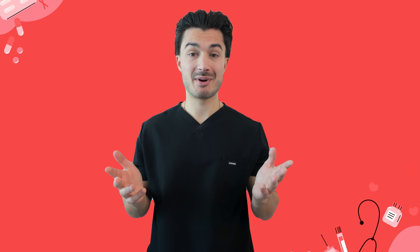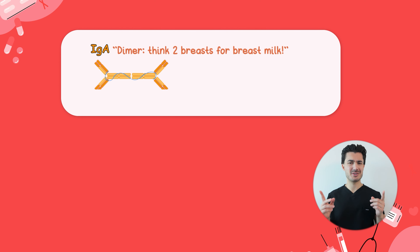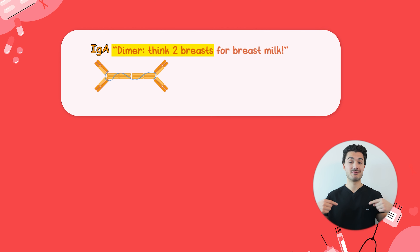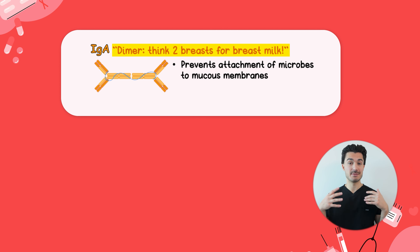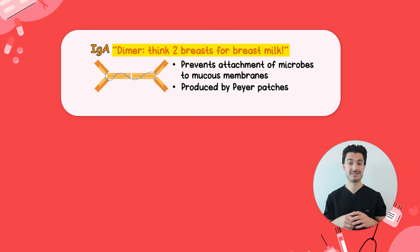Moving on, let's talk about IgA. It's key to know that IgA is a dimer, and the USMLE wants you to know that the two monomers are joined by a J chain. A silly mnemonic: think of dimer as two breasts to remember breast milk and other mucosal secretions from the GI and respiratory tract, because IgA is key in these mucosal secretions. The Peyer's patches in the small intestine, particularly the ileum, are the predominant source of IgA-producing cells.